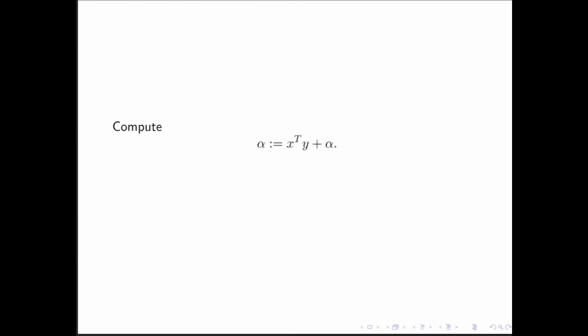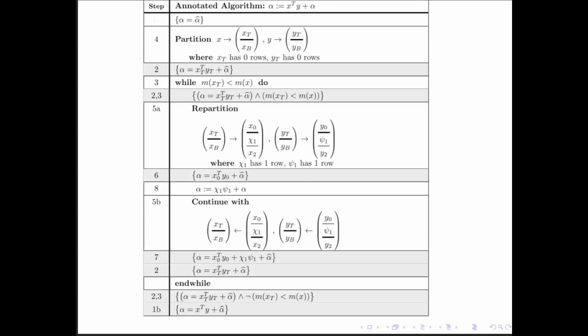Now let's derive the algorithm for the dot product to be correct. We're going to do this for alpha becomes x transpose y plus alpha. What we're going to do is fill out a worksheet for computing the operation. In this worksheet, dark colored boxes are going to be part of the proof of correctness, and the white boxes are the executable statements in the algorithm.